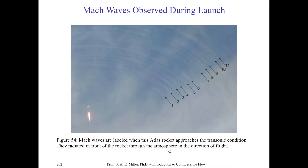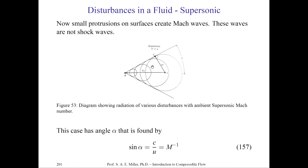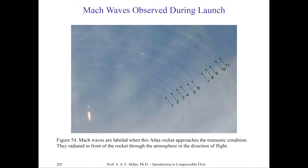We can observe Mach waves physically. In this photo, an Atlas rocket approaching the transonic condition shows Mach waves radiating in front of the rocket, labeled 1 through 11 among the clouds. These waves occur near the transonic condition where U ≈ C. The waves are not coalescing because the rocket is in the transonic regime. As the vehicle goes beyond the speed of sound, a system of Mach waves with a particular wave front forms, but these are overtaken by the dominant shock wave.